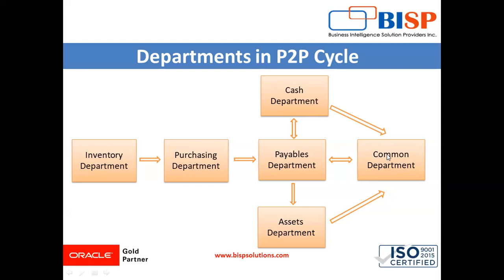This common department is nothing but the general ledger. When the company makes the final payment to the supplier, the cycle comes to close. The cycle starts from requisitions, then moves to the purchase order, and finally the payment to the supplier — at which point the cycle is complete. This is all about the P2P cycle.